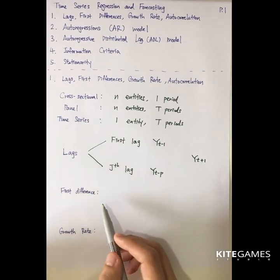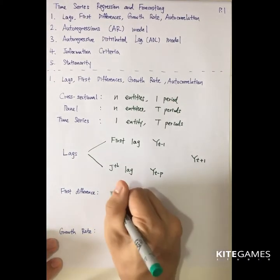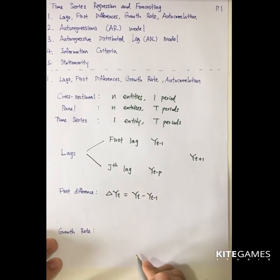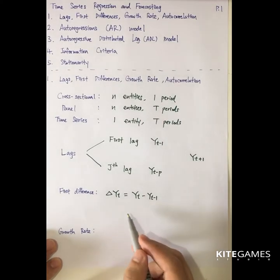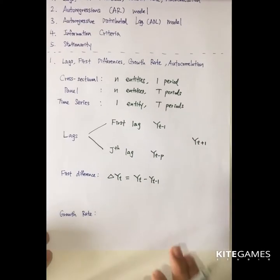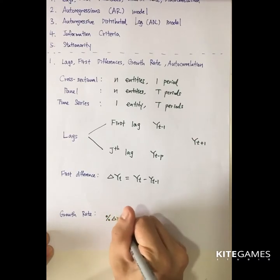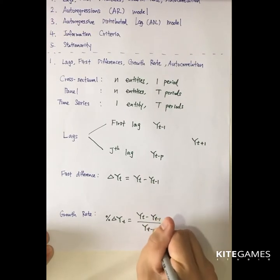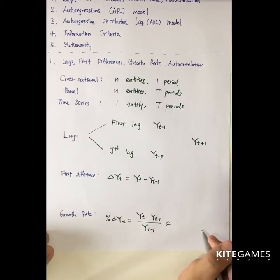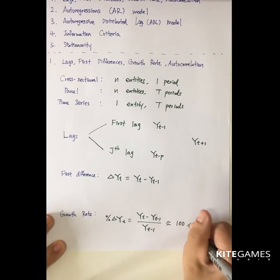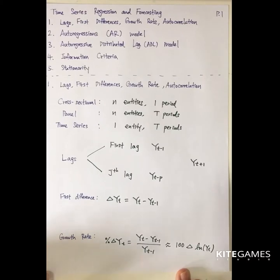The second terminology is the first difference, which means the change in the value of y from the last period: yt minus yt minus 1. Finally, the growth rate — the percentage change in yt — is equal to (yt minus yt minus 1) divided by yt minus 1, which is similar to 100 times the change in log yt. We have already covered this concept in the non-linear regressions.